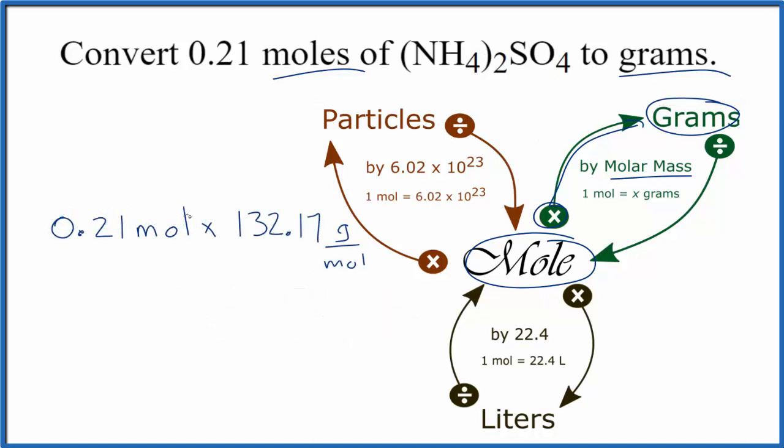Now when we multiply, the moles on top and bottom cancel out. We're going to be left with grams, which is what we're looking for. So we know we've done this correctly because our units work out. And we get a total of 27.76 grams of ammonium sulfate.